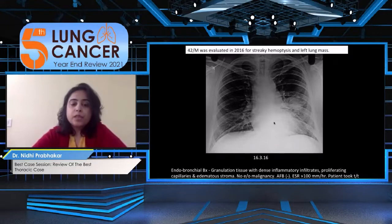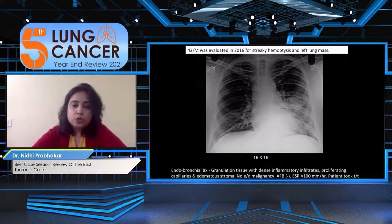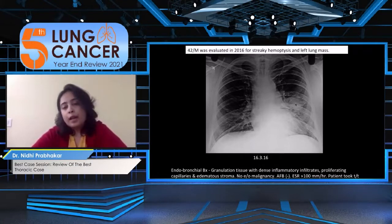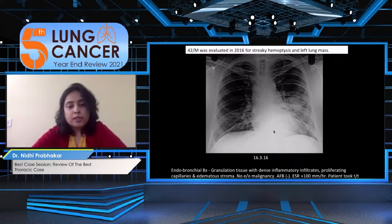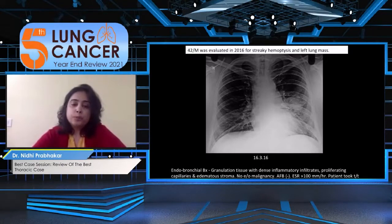This patient came to PGI in 2019 but had been evaluated outside for a left lung mass since 2016. The 2016 chest X-ray showed a homogeneous mass in the left mid zone, with inhomogeneous opacity in the left lower zone showing a bronchogram. The patient was evaluated outside, had no fever, and underwent endobronchial biopsy which showed granulation tissue. Because the patient's ESR was raised, treatment for tuberculosis was given, though exact details were not available.